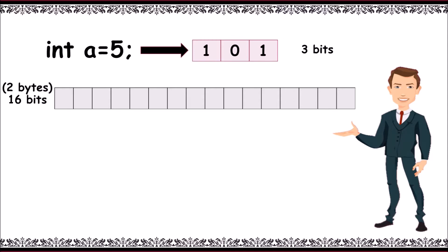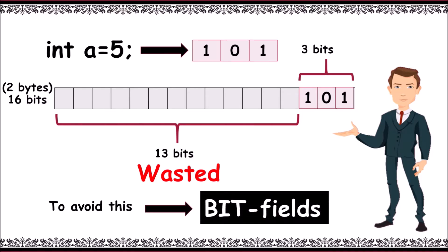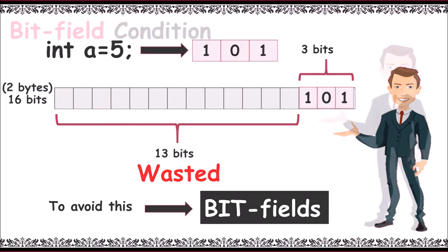Now saving it into integer a, among 16 bits it just requires 3 bits. What about the remaining 13 bits? They get wasted, right? So to avoid this, we use a concept called bitfields.